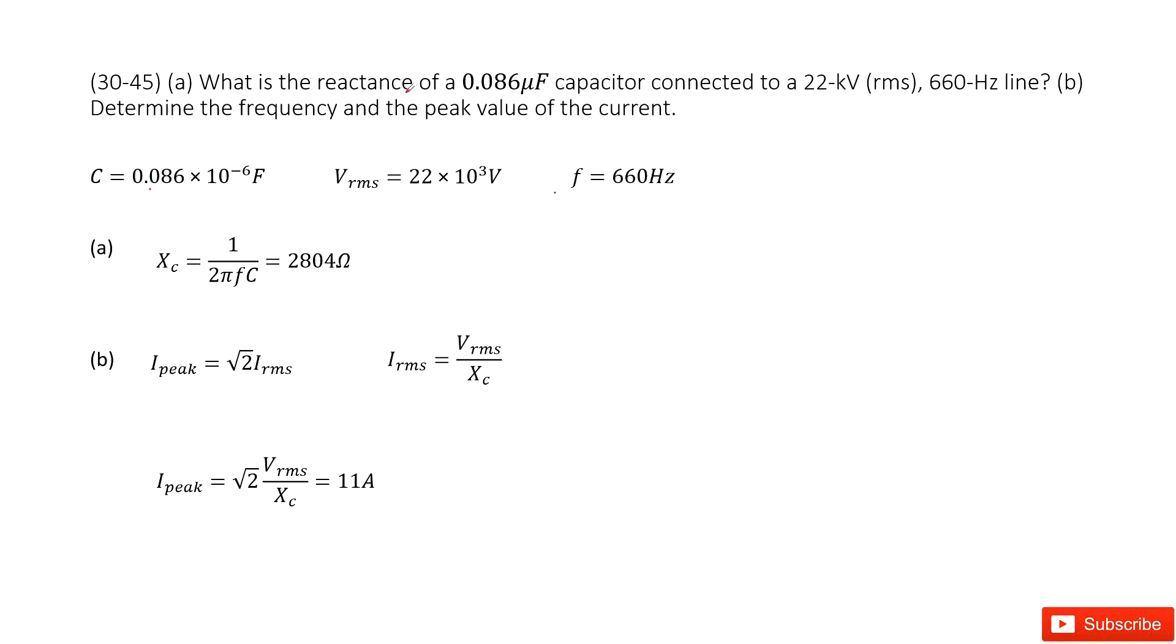The first part asks you to find the reactance. This is very straightforward. We just write down the equation for reactance: X_c equals 1 over 2πfC. The frequency f is given, C is given, so input the given quantities and you get the answer.